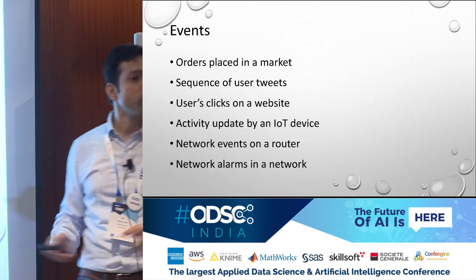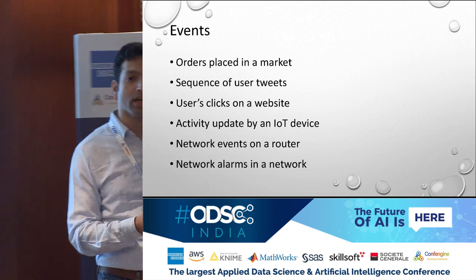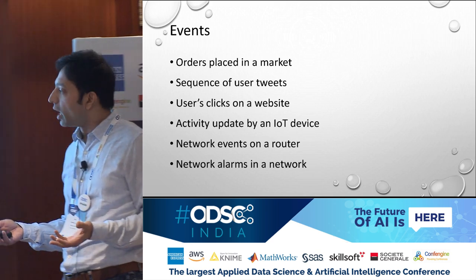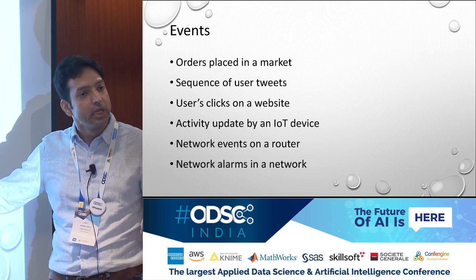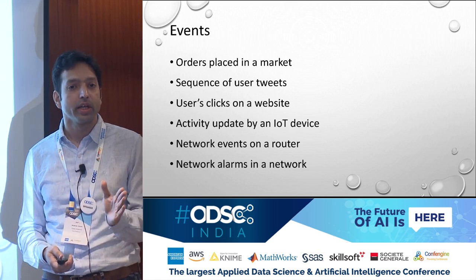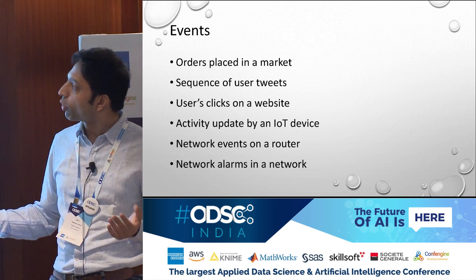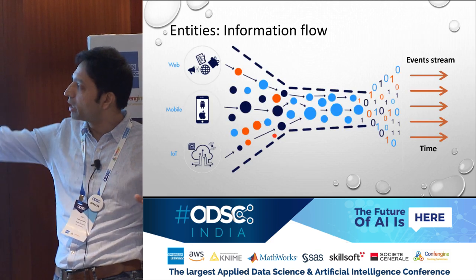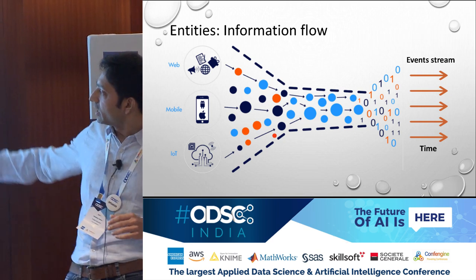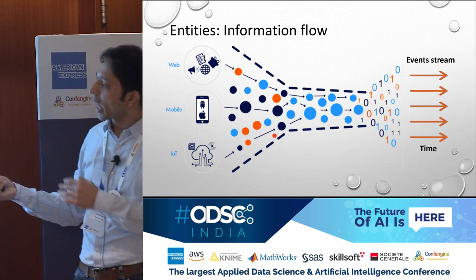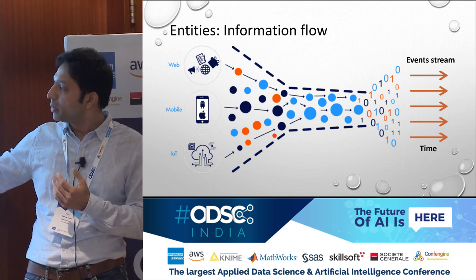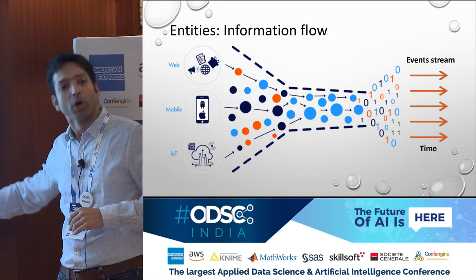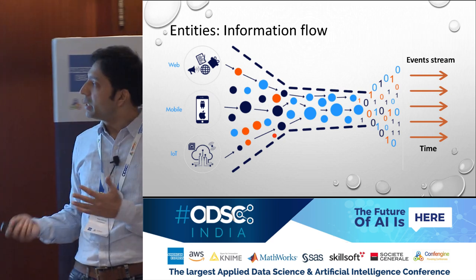Events could be anything in the digital world — orders placed in financial markets, users tweeting on social media, people clicking on websites, or events from IT devices and routers. Anything that comes with a timestamp is an event. Any digital entity generating information over the scale of time is basically an event, and we want to capture and understand these events.